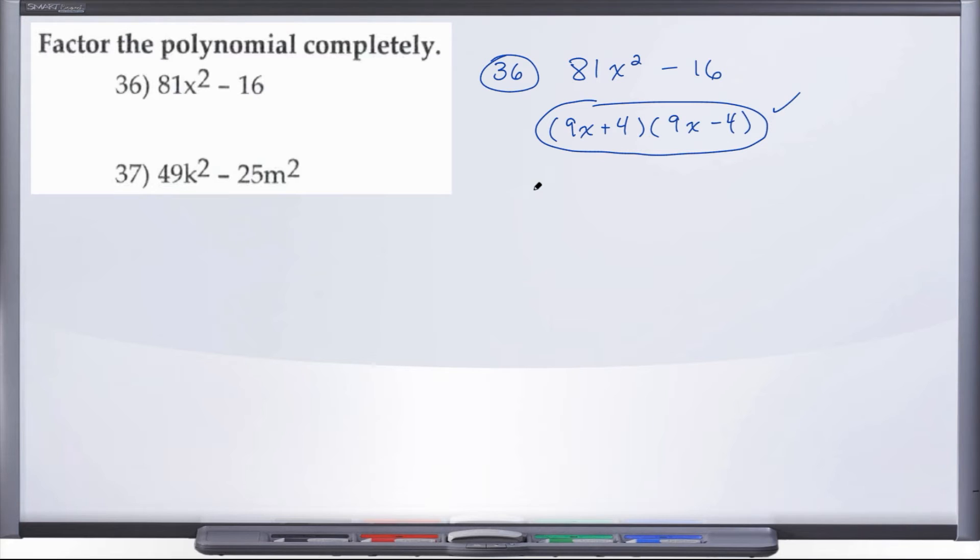All right, let's take a look at 37. They give us 49k² minus 25m². Again, question number one: is there a GCF? No, I don't see one. But we're dealing with question two, which asks how many terms? I have two terms, so I need to be on the lookout for either the difference of perfect squares or the sum or difference of cubes. We're not dealing with cubes here because these would have to be threes. We must be dealing with a difference of perfect squares.